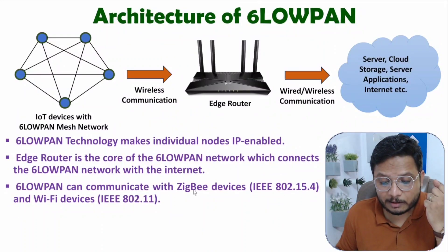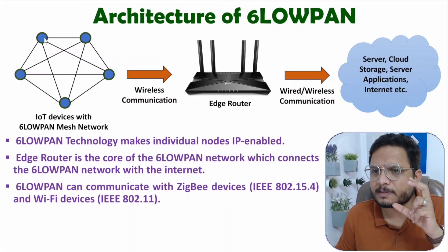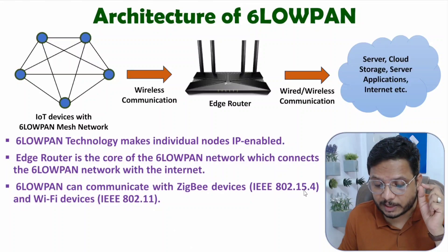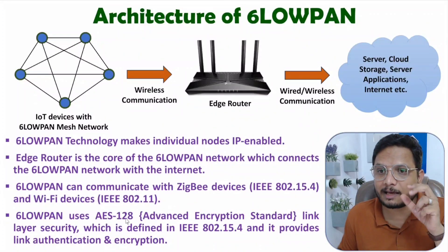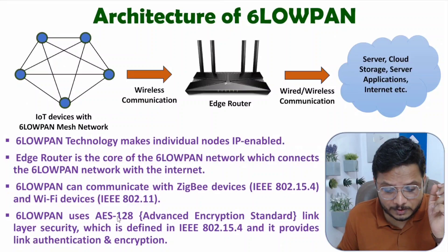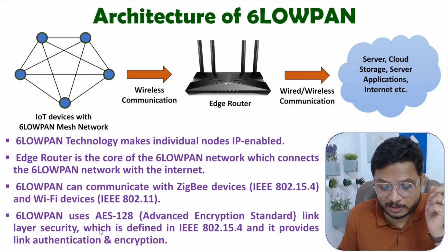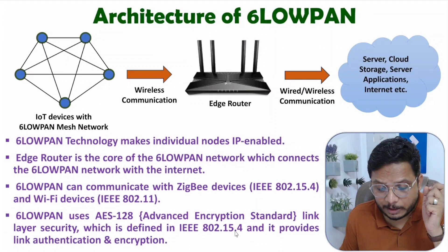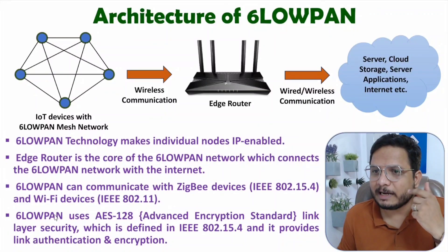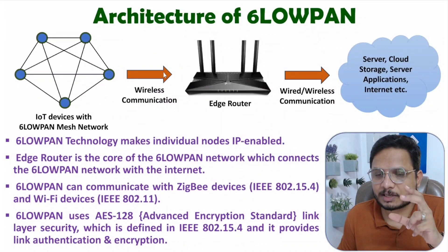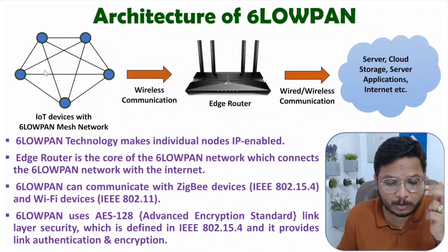6LoWPAN can communicate with Zigbee devices — nodes can use Zigbee protocol as per IEEE 802.15.4, or they can use Wi-Fi as per IEEE 802.11. 6LoWPAN uses AES-128, which is Advanced Encryption Standard, providing a security layer. This AES-128 is already defined in IEEE 802.15.4 and provides authentication and encryption, so data transmission includes both authentication and encryption.